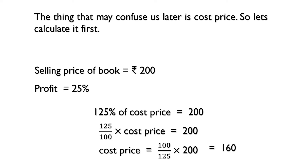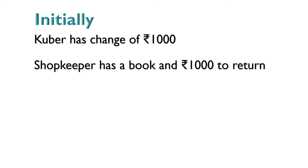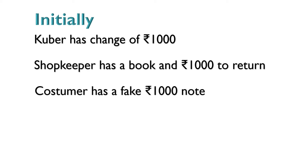Initially, Kuber has change of thousand rupees, shopkeeper has a book and the thousand rupees to return, and the customer has a fake thousand rupee note. If we know the final conditions, we can calculate the loss easily. So let's visualize everything.